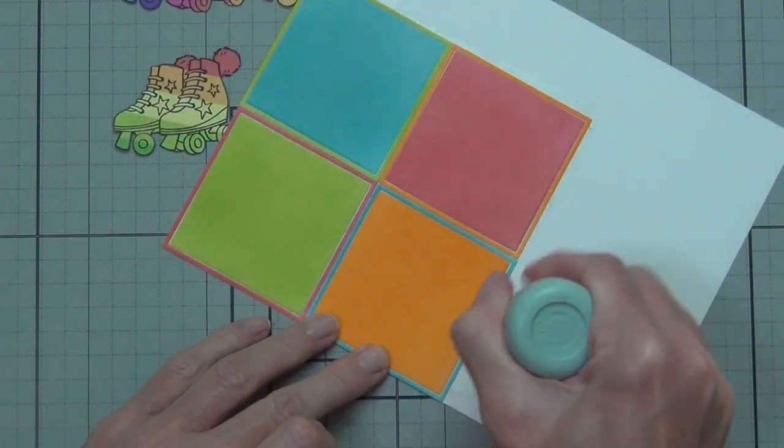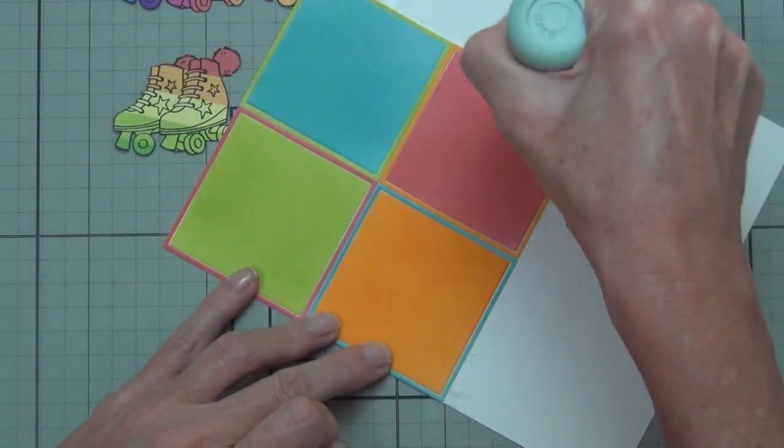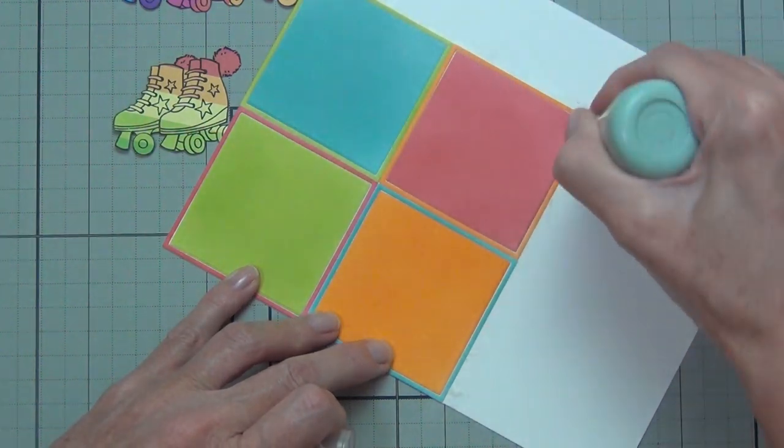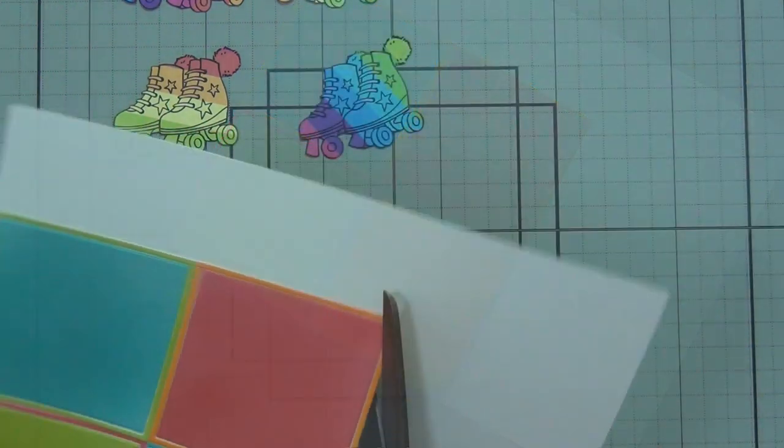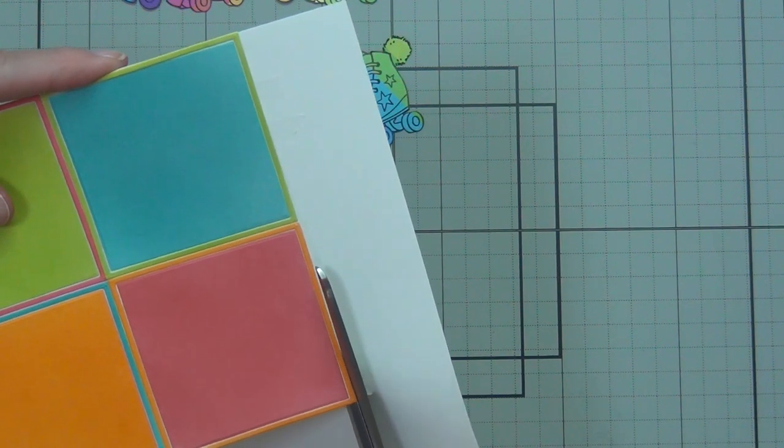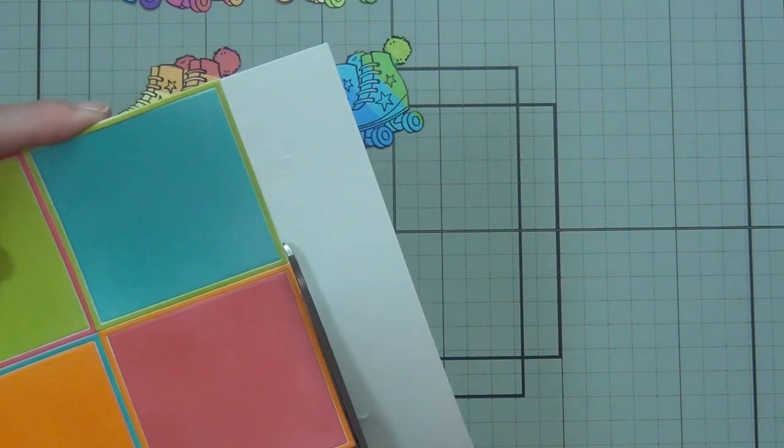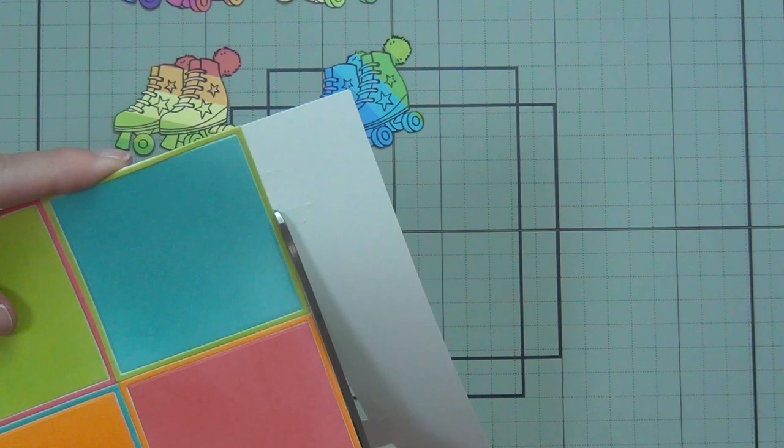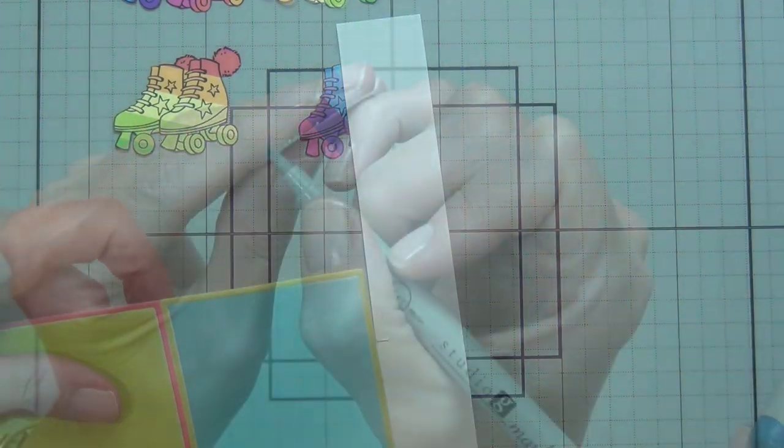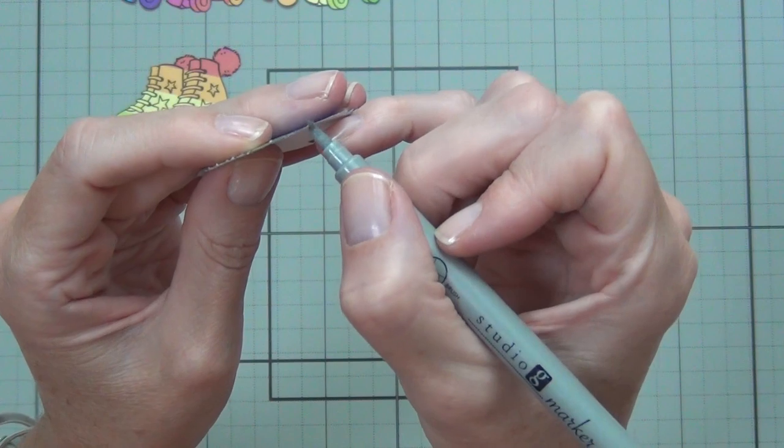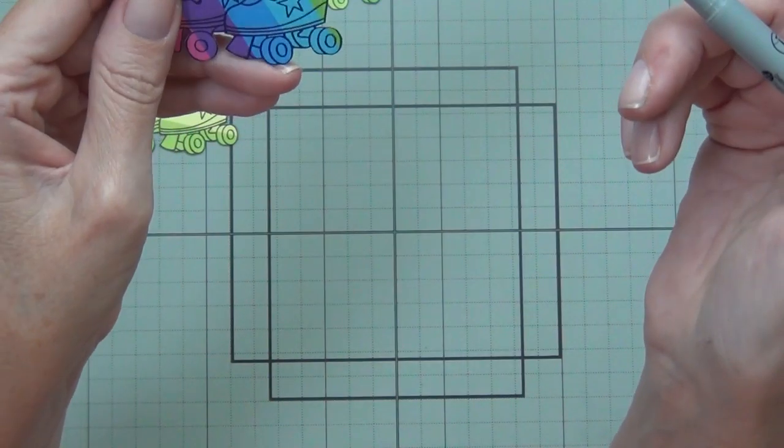To get rid of the tackiness of the tape before I cut out the edge of this, I just use the powder tool. Then I'm using some nice long straight sharp scissors to cut the edges away.